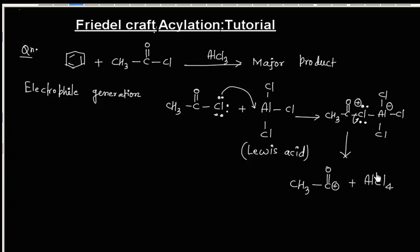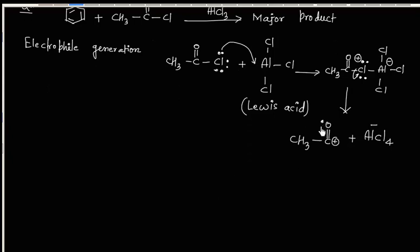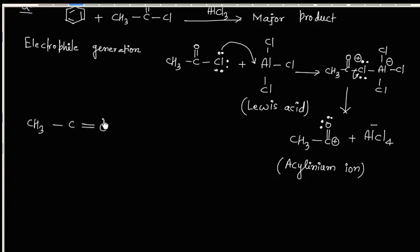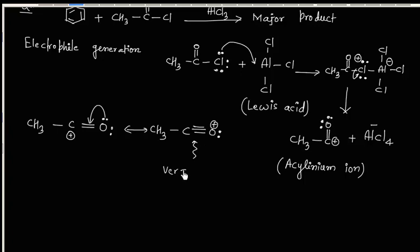AlCl4- is the inorganic product. CH3CO+ is also called the acylium ion. The acylium ion is resonance stabilized and it is very stable. We can write a resonating structure for the acylium ion, and this structure is very stable because the octet of each atom is complete.